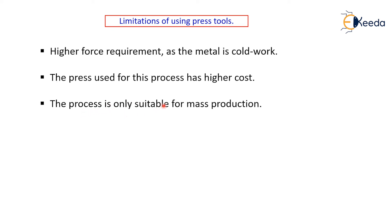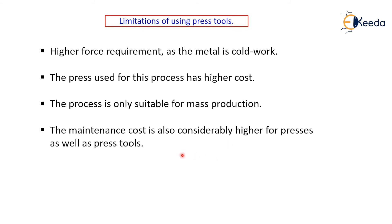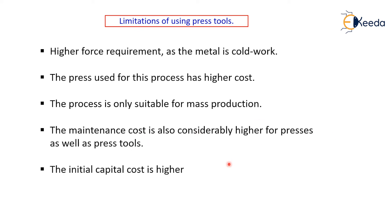This process is typically suitable for mass production, where each component requires maybe a thousand, maybe lakhs, or maybe 10 lakhs and so forth. The machine involved in the process requires a higher maintenance cost, and the same maintenance cost applies to the press tools as well. The initial capital cost is higher. These are the limitations of the press working process.